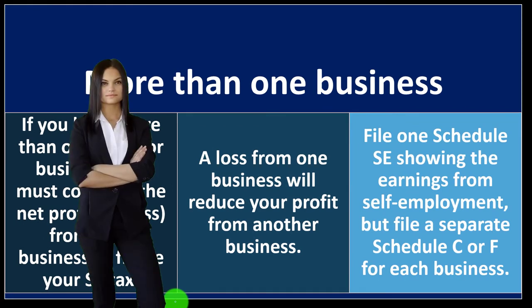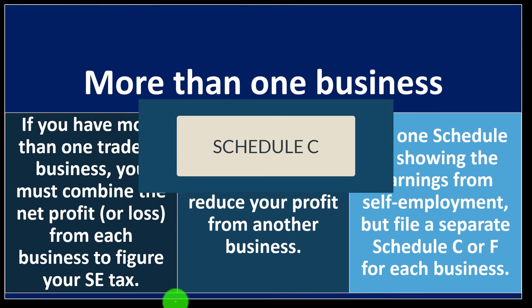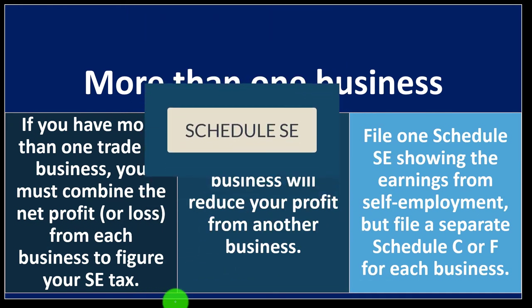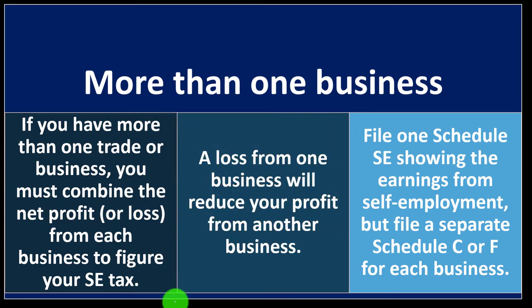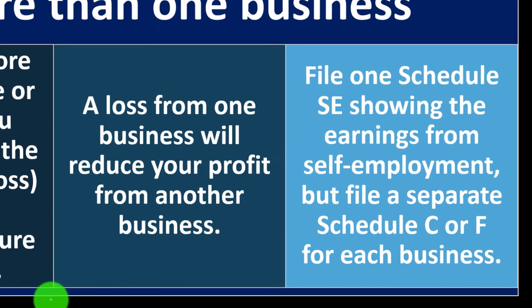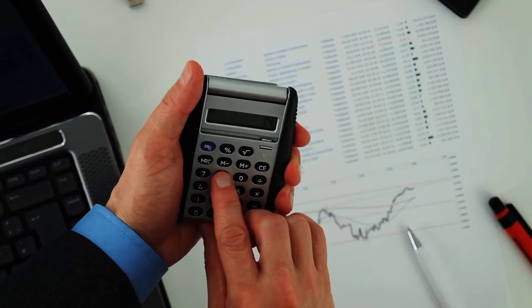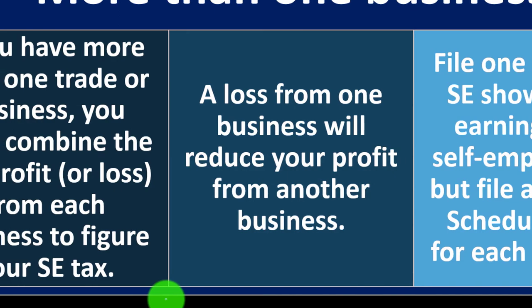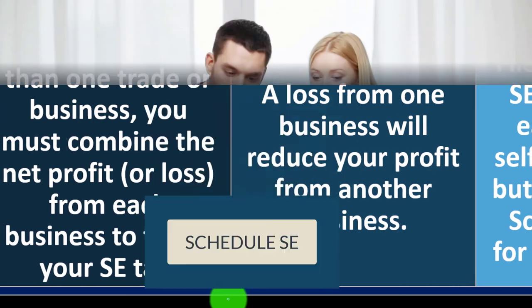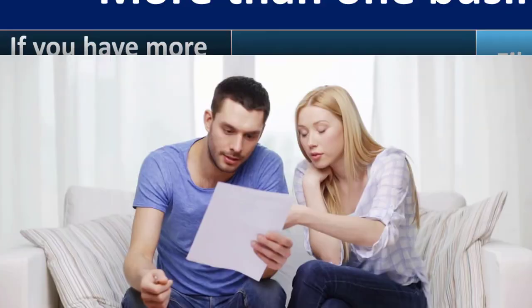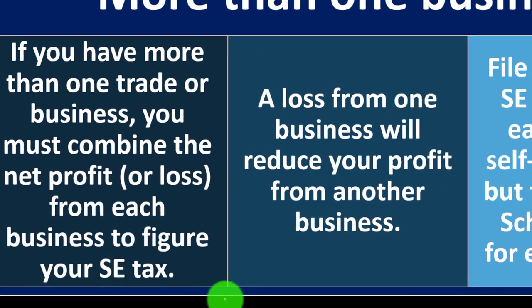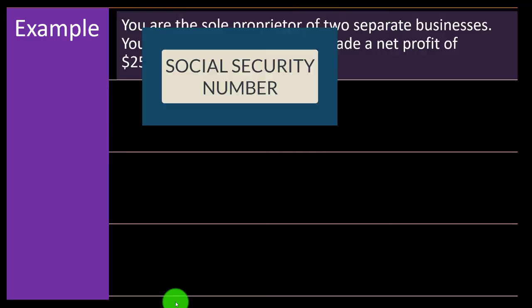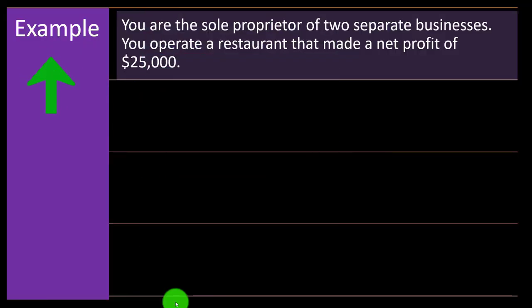So if you have two businesses for one individual, you might have two Schedule C's but only one Schedule SE, because the income feeding into it is allocated to the same individual. This is different from the married couple situation, where two individuals need separate Schedule SE's so that Social Security contributions are applied to the correct Social Security number.